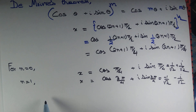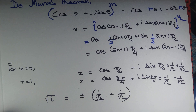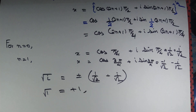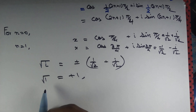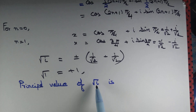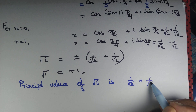So we say that √i = ±(1/√2 + i/√2). However, someone might argue that by square root of 1 we mean just +1. Similarly, we have something called the principal value of √i. The principal value of √i, corresponding to n = 0, is 1/√2 + i/√2.